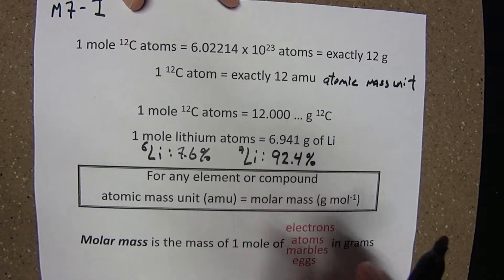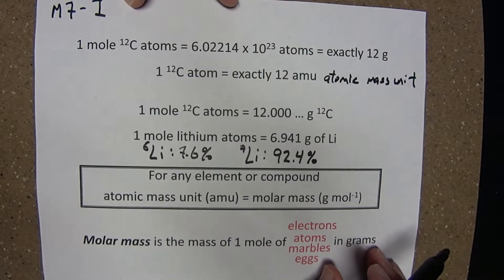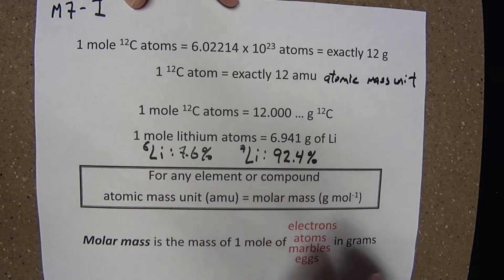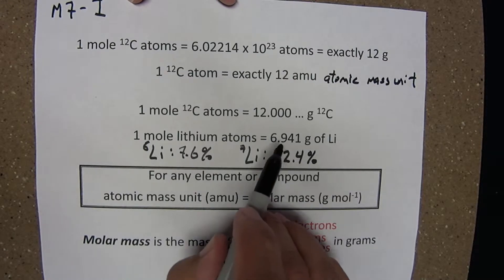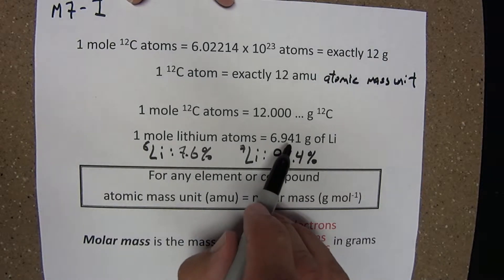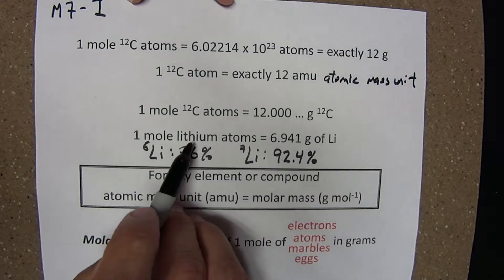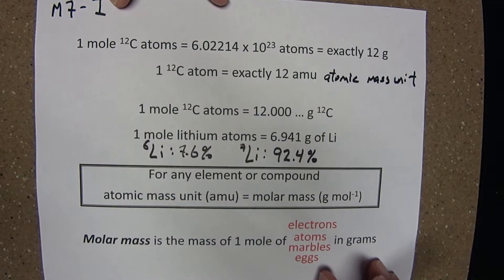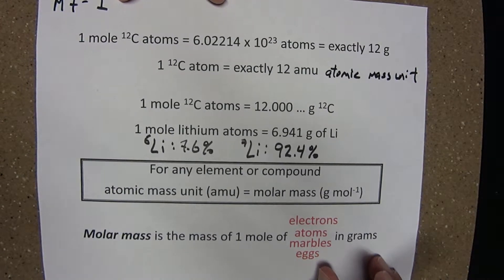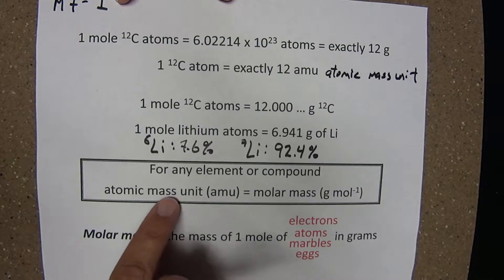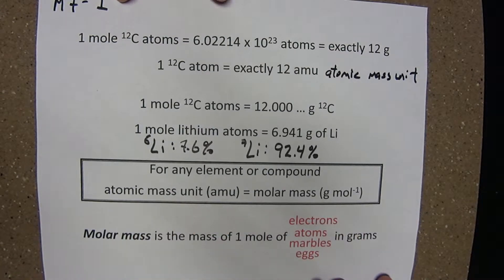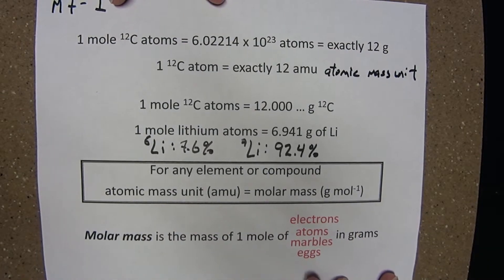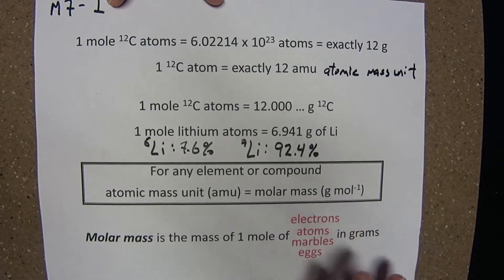Which accounts for the remaining 92.4% of the lithium atoms. That value that we would see, that atomic mass on the periodic table, calculated from these percent abundances in decimal form, is the mass that would contain one mole of lithium atoms, a combination of lithium-6 and lithium-7. So, for any element or compound, the numerical value that precedes the unit in AMU or grams per mole would be the same.